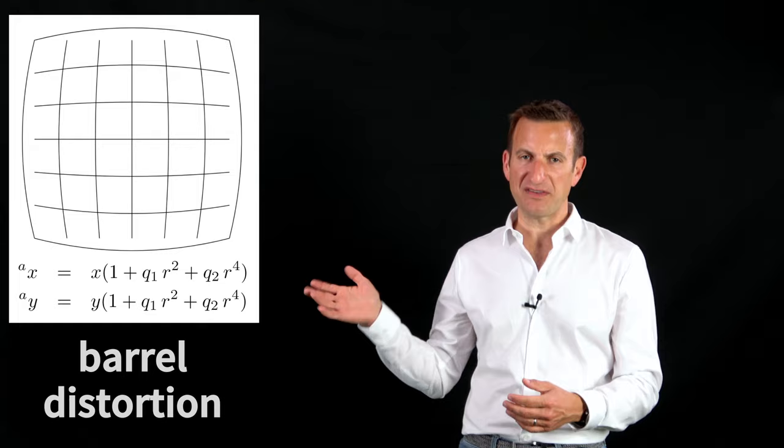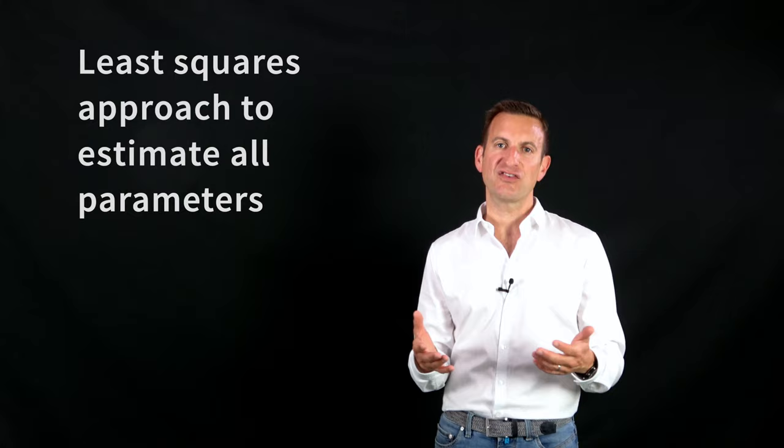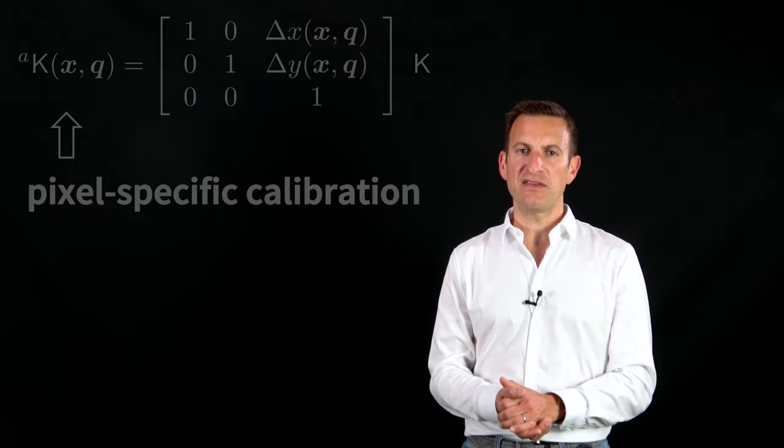So specify a model, how it affects the coordinates of your pixels. And then you can actually run this through a big least squares approach and try to estimate also the nonlinear parameters here called Q and estimate those parameters in order to correct your mapping process.